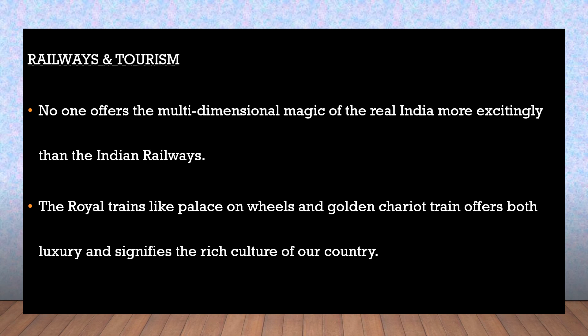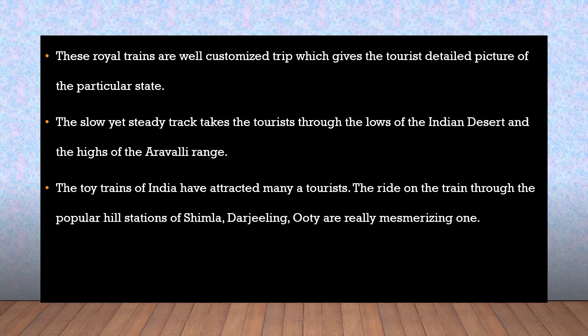Railways and Tourism: No one offers the multi-dimensional magic of the real India more excitingly than the Indian Railways. Royal Trains like Palace on Wheels and Golden Chariot offer both luxury and signify the rich culture of our country. These Royal Trains are a well-customized trip which gives tourists a detailed picture of the particular state, taking them through the lowlands of the Indian desert and the heights of the Aravalli range.